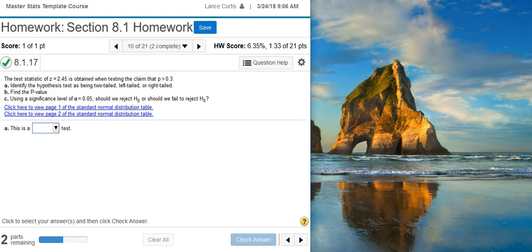Part A wants us to identify the hypothesis test as being two-tailed, left-tailed, or right-tailed. To do that, we simply look at the claim that we're making. Remember that this often comes from the alternative hypothesis that we create, and very often, the alternative hypothesis reflects the claim that's being made. Here, the claim that's being made is that the population proportion is greater than 30%.